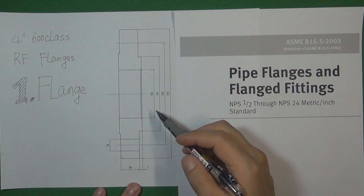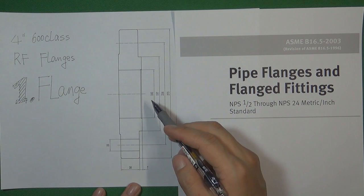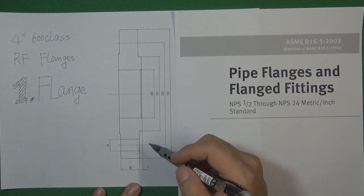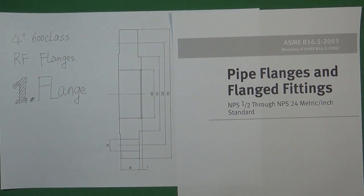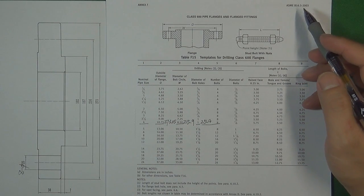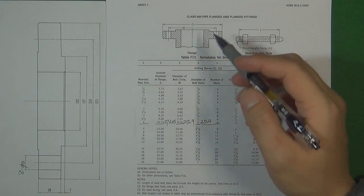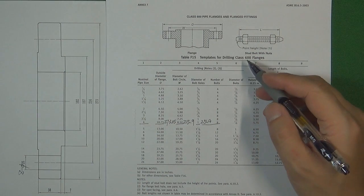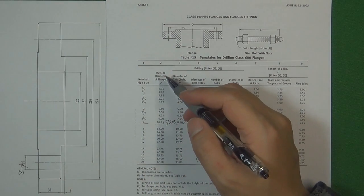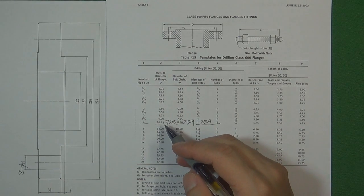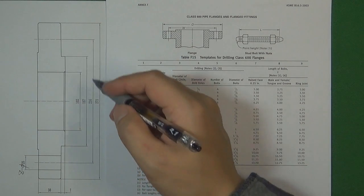The first step is to draw the flange. We're going to use ASME B16.5 to draw this flange. One flange has at least seven different dimensions. Here is the standard ASME B16.5. This table is for the 600 pressure class flange connection. Our design gate valve size is 4-inch. So we can find the first dimension: the outside diameter of the flange, which is approximately 273 mm. So we're going to use 273 mm to design the gate valve flange outside diameter.